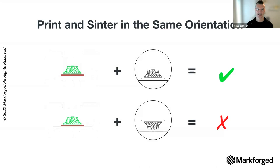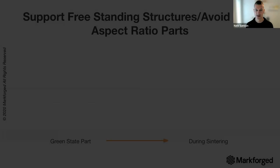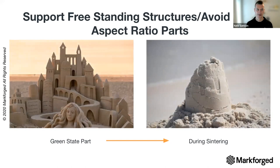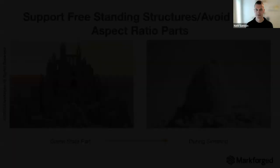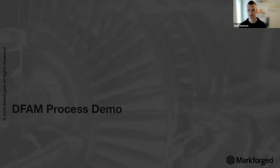For the wash process, the thickest part of your geometry drives the wash time. To be more efficient, you can shell your parts or achieve a more uniform part thickness to drive wash time down. For sintering, print and sinter in the same orientation — an impeller on a raft, for example, needs to go into the furnace in the same orientation. Think of your parts going into the furnace like a sandcastle — tall overhanging features that met unsupported design requirements may not be a good fit for the sintering process due to overhanging mass.